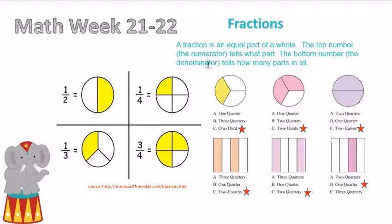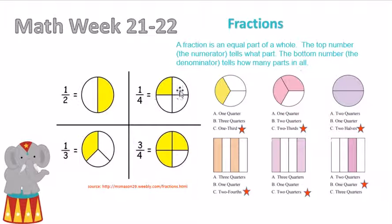The top number, the numerator, tells what part, and the bottom number, the denominator, tells how many parts in all. So the top number is the number that is shaded in, and the bottom number is the number that we have in all. This fraction is one-fourth, this fraction is one-third, this fraction is three-fourths.